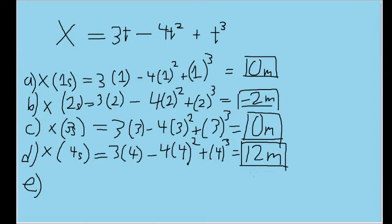But now we have part e, which asks us to find the object's displacement between the t values of zero and four seconds. Remember, displacement is defined as the change in position between two points. So we take the position at the later point in time (four seconds) and subtract the position at the lower point in time (zero seconds) to find how much the position has changed.